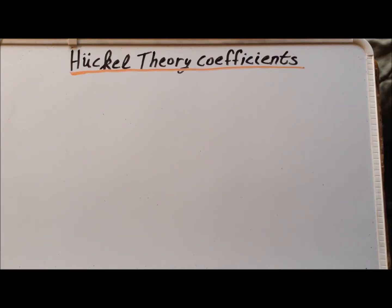Hello. In this video, we are going to use simple Hückel theory to derive the molecular orbital coefficients for the pi system of the allyl cation.